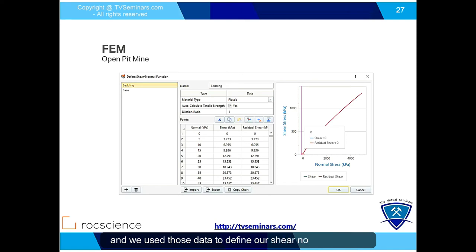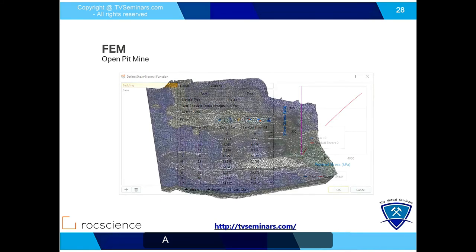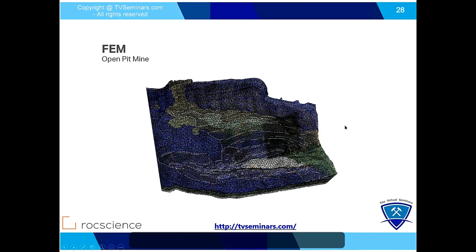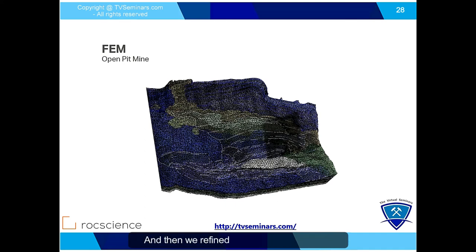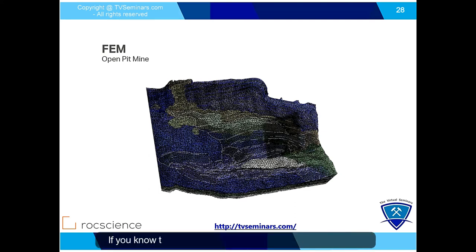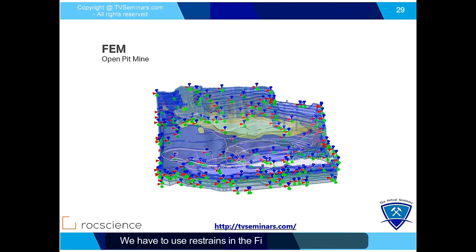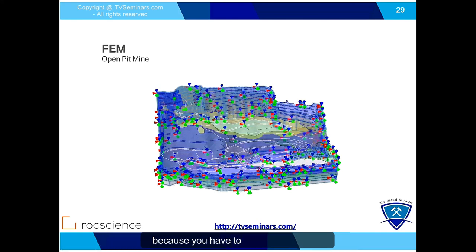After defining these materials and the layers, we mesh the model. If you look at this region, you can see that the mesh is a bit finer because we ran the model using limit equilibrium first, found that it was the critical region, and then refined the mesh in that region. This is one of the tricks that people use — if you know the failure region in advance or can estimate it, you can refine the mesh to get a better answer for that region. We use fixed restraints for the sides and bottom, but the top surface for slope stability is free because the slope needs to be able to fail.